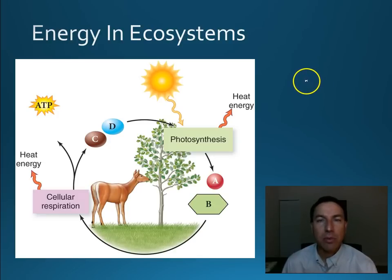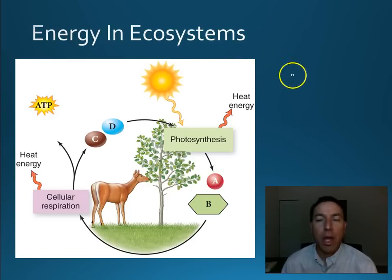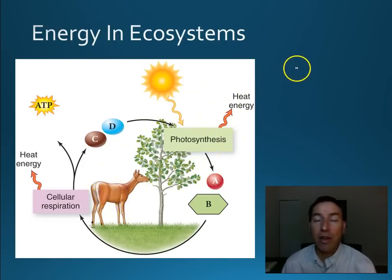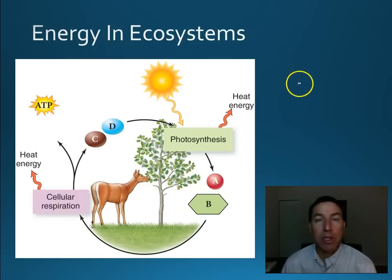One of the things about ecosystems we have to realize is that energy flows through them in one direction. Ultimately, for all ecosystems the energy comes from the sun. As plants take that energy they turn it into a chemical form of energy which animals can then consume and use. During all these transfers we lose some energy, so energy transfer is not very efficient in ecosystems.